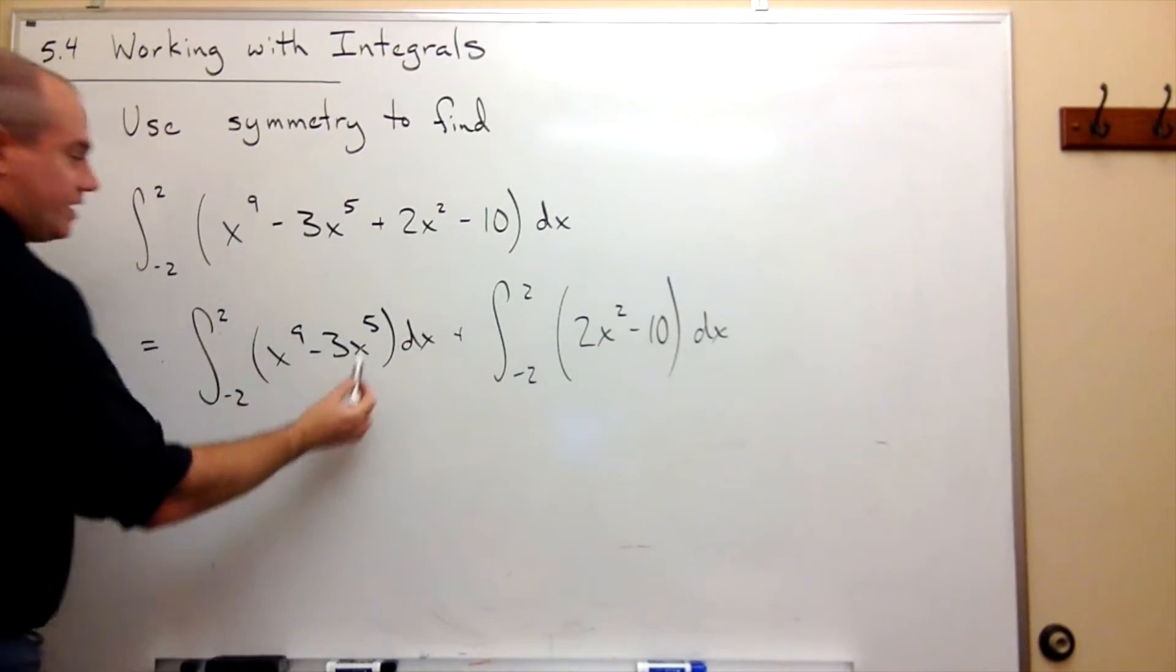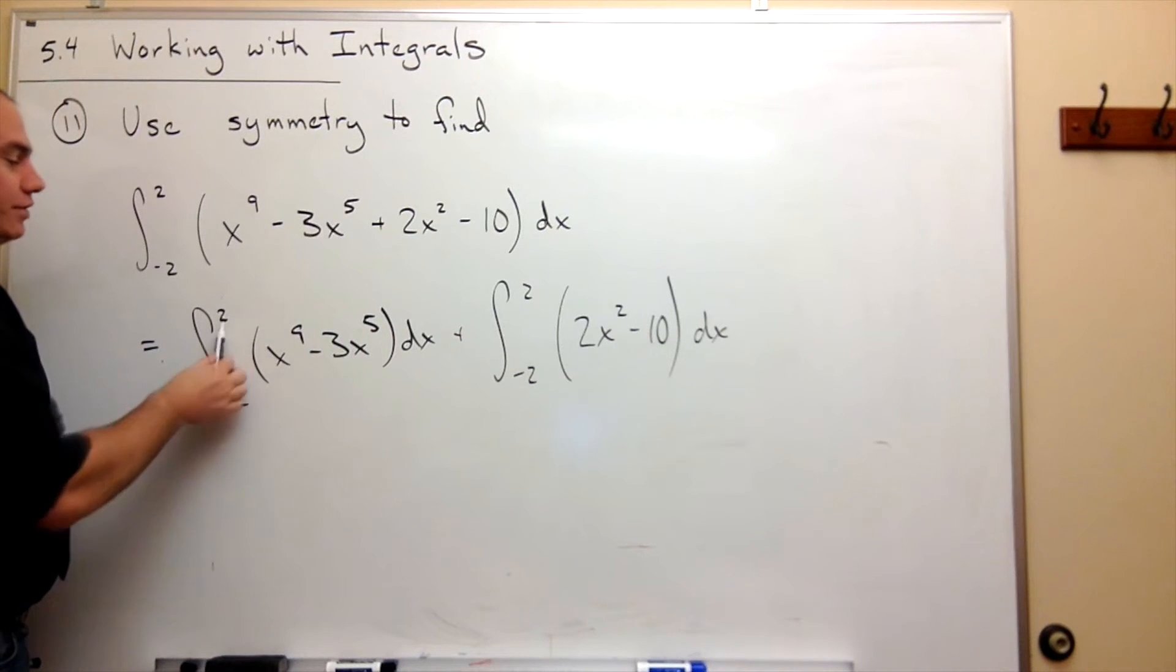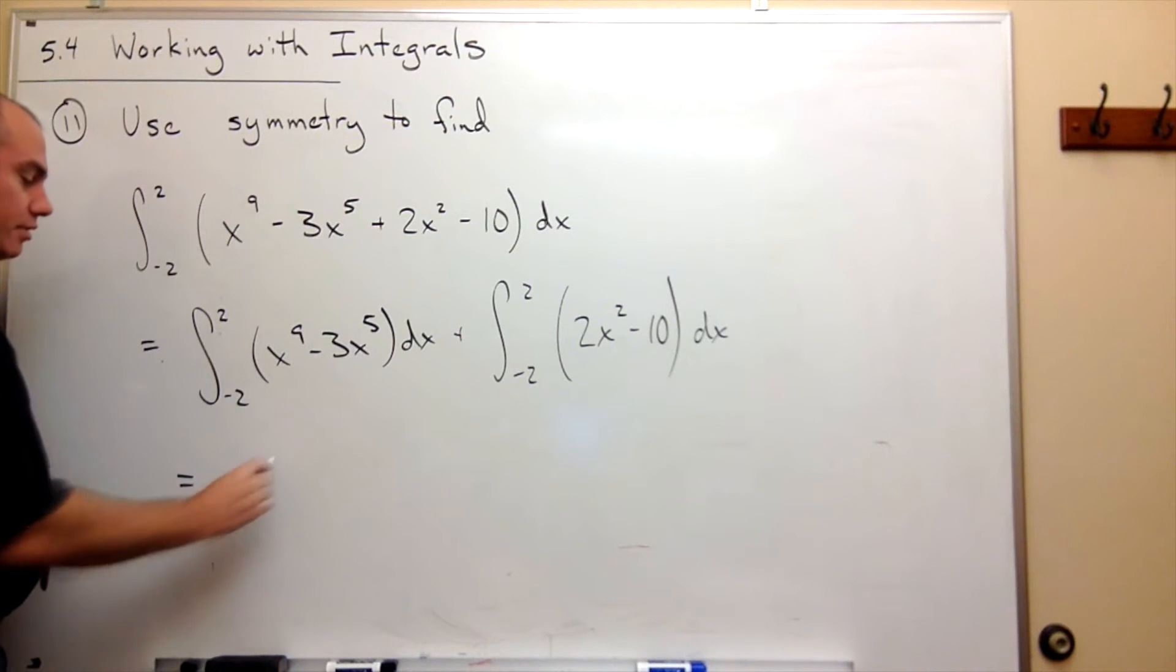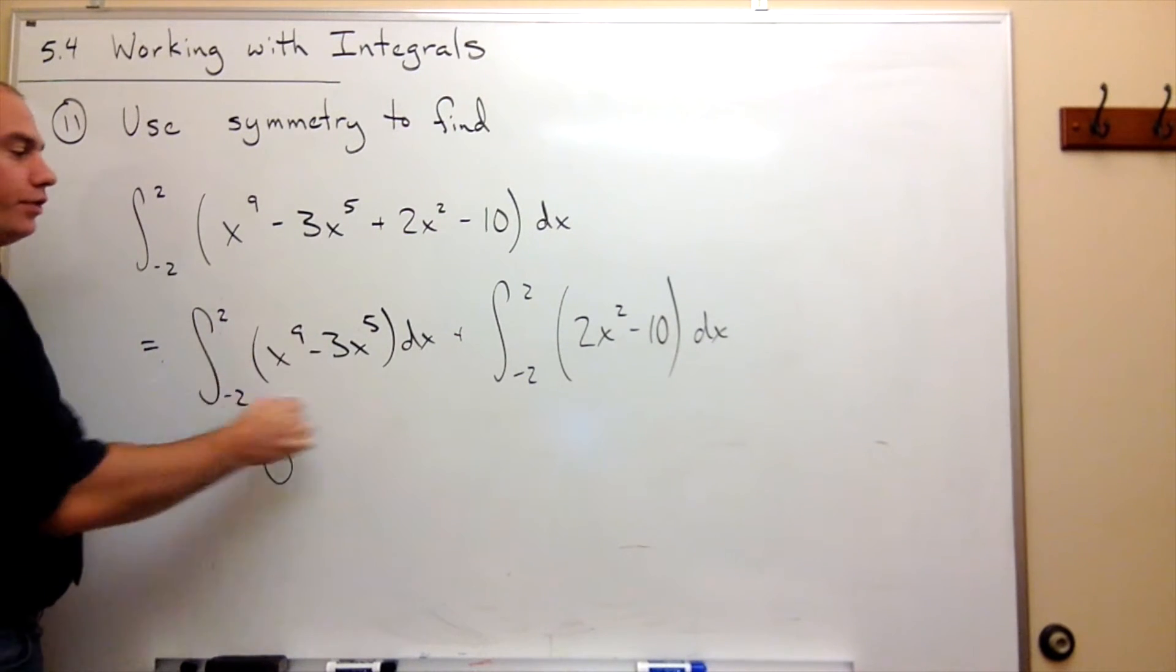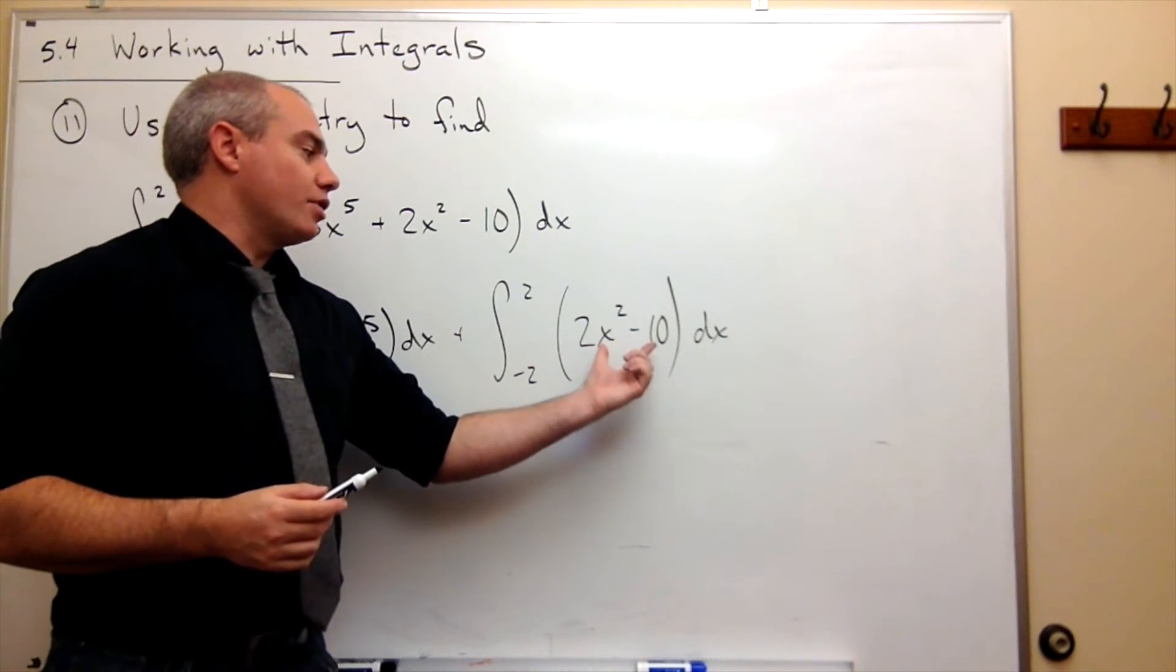Now, since this guy is all an odd function, the integral from negative 2 to 2 of an odd function dx, that's just 0. So this whole thing is 0, and we're done with that.